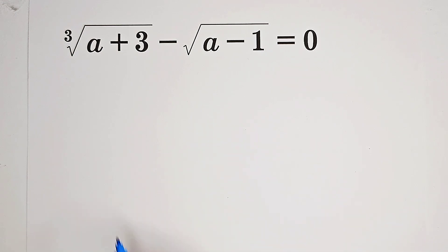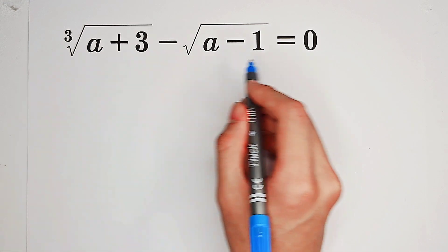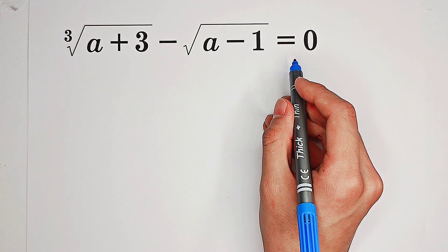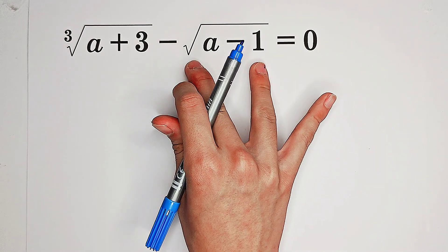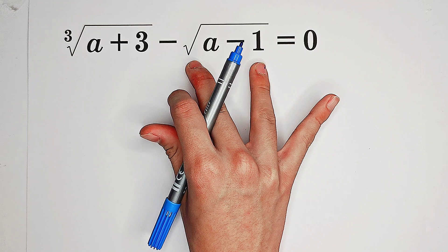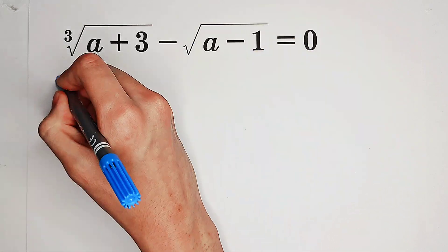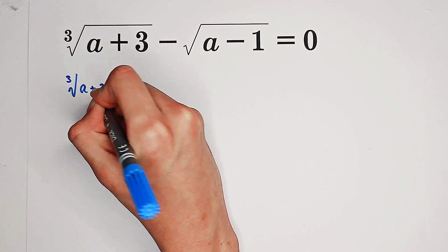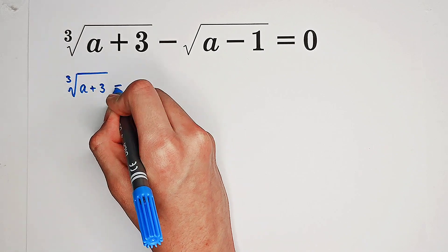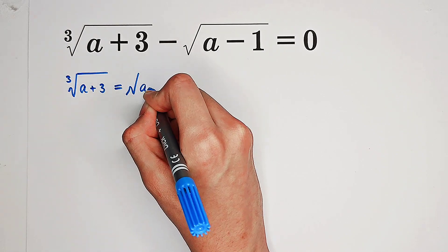What shall we do now? Of course, we see that we have 0 on the right-hand side, so we can bring this term, this square root, to the right-hand side. So we get the cube root of a plus 3 equals square root of a minus 1.